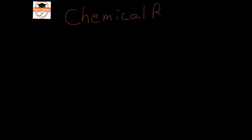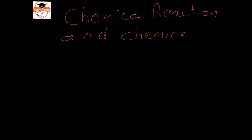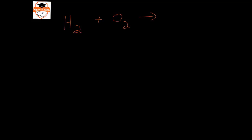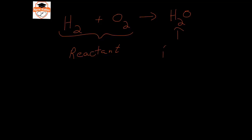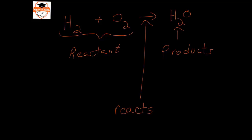In this video, we're going to discuss chemical reactions and chemical equations. Here is an example of a chemical reaction. On the left-hand side of the reaction arrow, we have our reactants. These are the compounds or elements that get together to produce what's on the other side of the reaction arrow, which is the product. The arrow means 'reacts to produce.' So here we would say that hydrogen and oxygen get together to produce water.